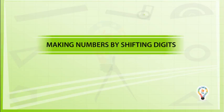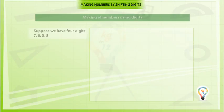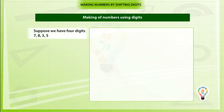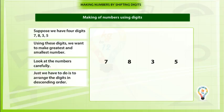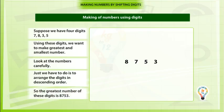Making Numbers by Shifting Digits. Suppose we have four digits: 7, 8, 3, 5. Using these digits, we want to make the greatest and smallest numbers. Look at the numbers carefully. All we have to do is arrange the digits in descending order. So the greatest number of these digits is 8, 7, 5, 3.